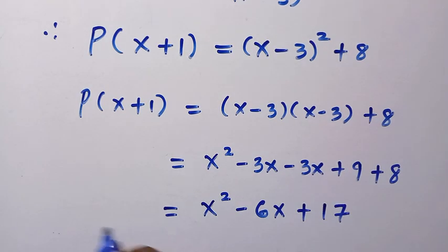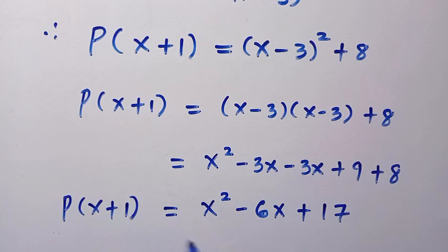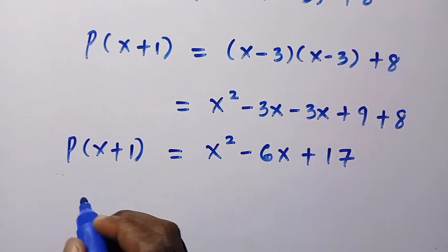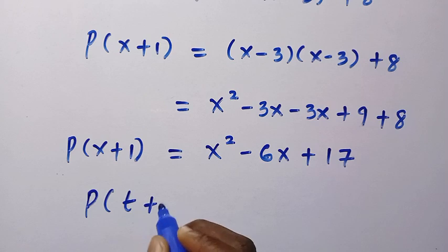And this is the result of P(x + 1). Now we change x to t because we have to find P(t + 1). Therefore, P(t + 1) = t² - 6t + 17.